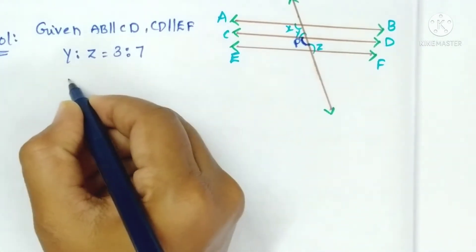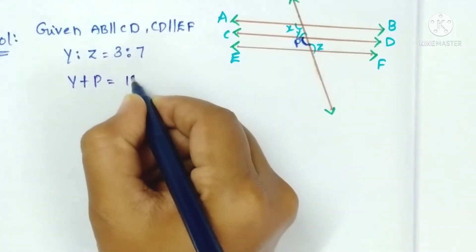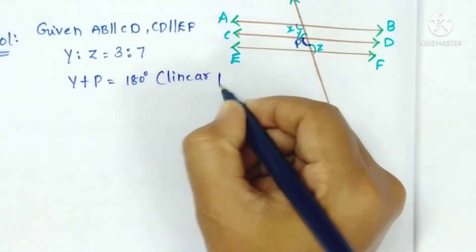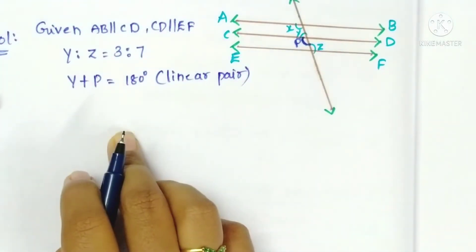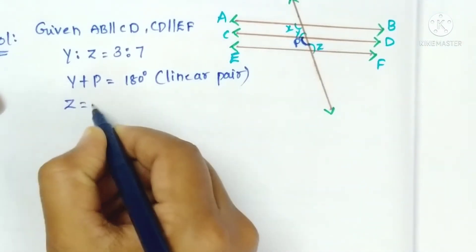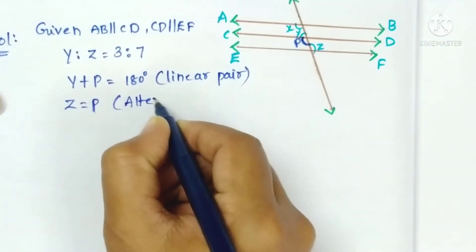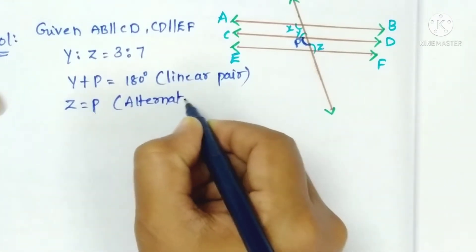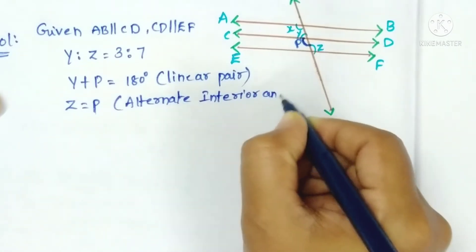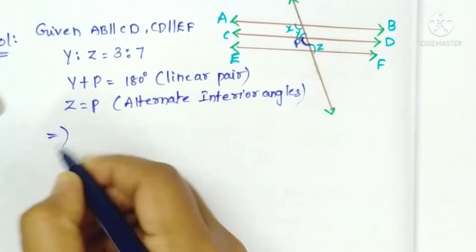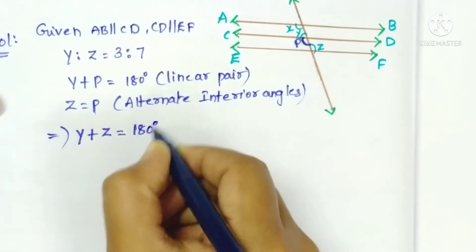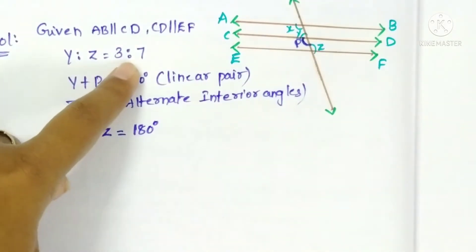y plus p equals 180 degrees because they both form a straight line — a linear pair. And z equals p by alternate interior angles. Therefore, y plus z equals 180 degrees.